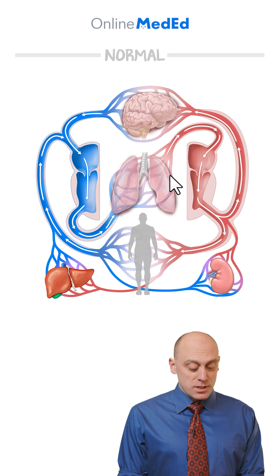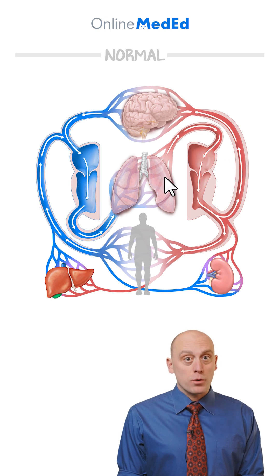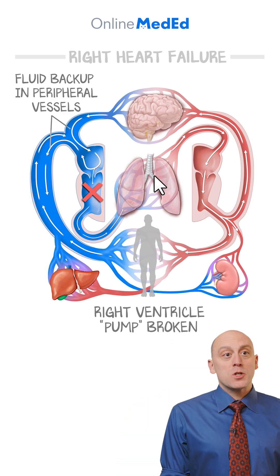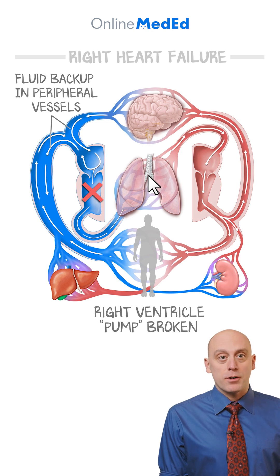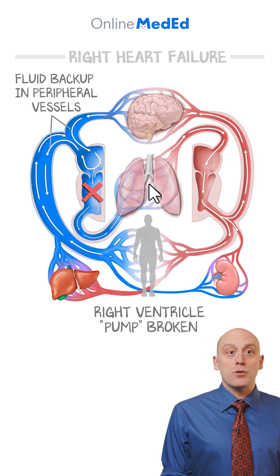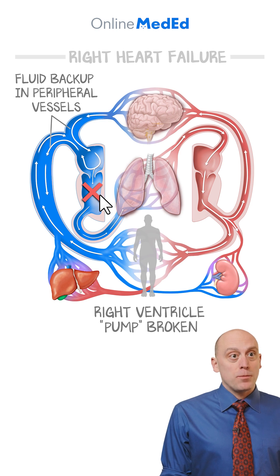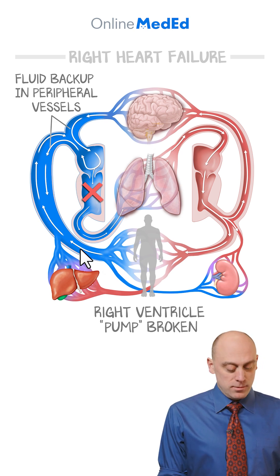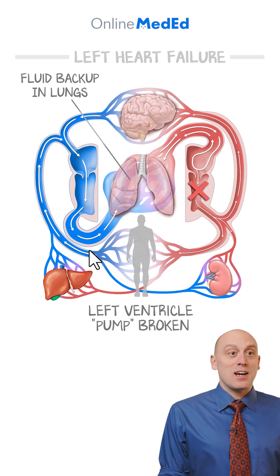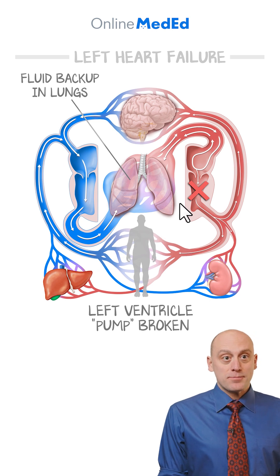When you have heart failure, blood is going to back up before the broken pump. If there's pulmonary hypertension — that is, right heart failure in isolation without left heart failure — fluid is going to back up before the broken pump. You're going to see venous distention and congestion, with edema in the periphery.